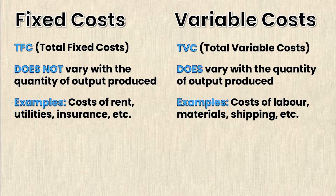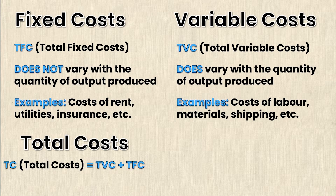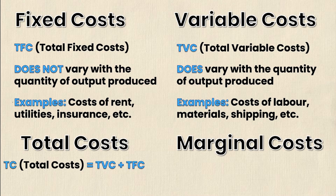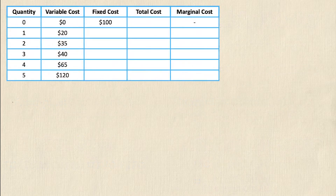Since there are only two types of costs — fixed costs and variable costs — the total costs, denoted as TC, is simply the sum of the two: total variable costs plus total fixed costs. But if you want to know how much producing one more unit of output is going to cost, you use something called marginal cost. Marginal cost, denoted as MC, is simply the change in total cost divided by the change in quantity.